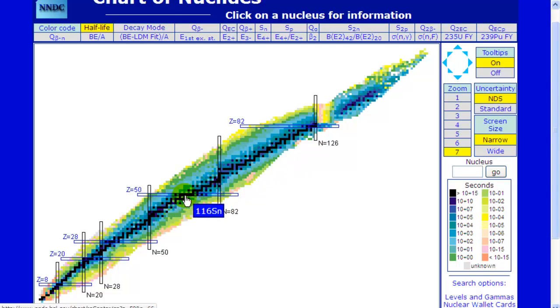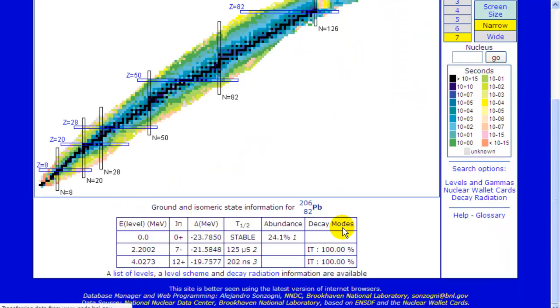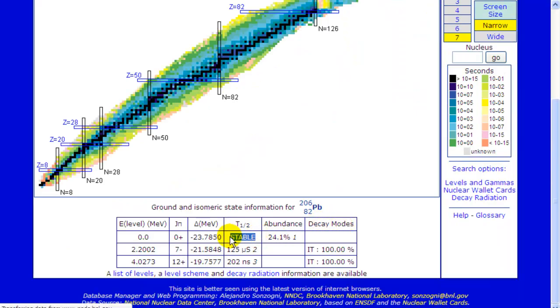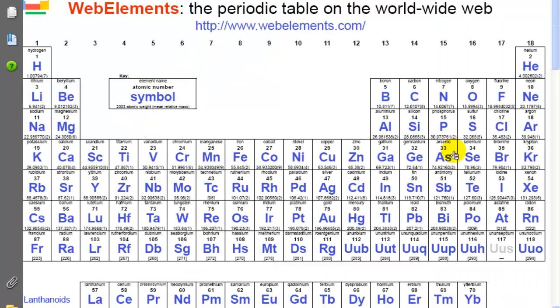And if we were to click on one of these, like say, lead-206, that's a stable version of lead. And we look over at the periodic table of elements, you'll see that its atomic mass is about 206. It turns out to be 207.2, and we're actually going to calculate that in a minute as an exercise to get you used to this chart of nuclides.